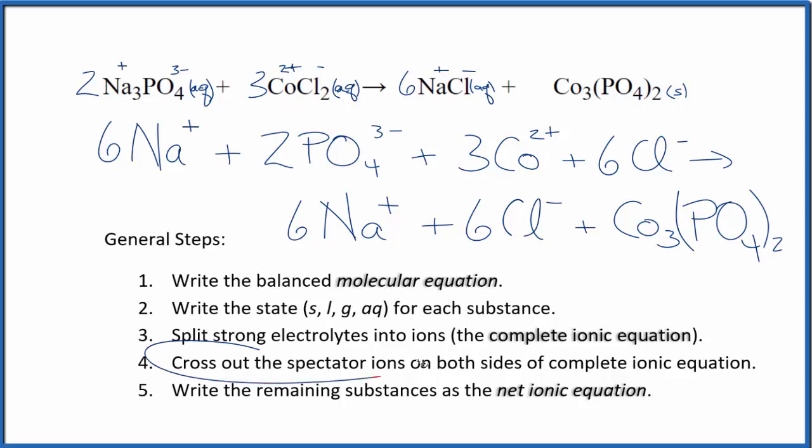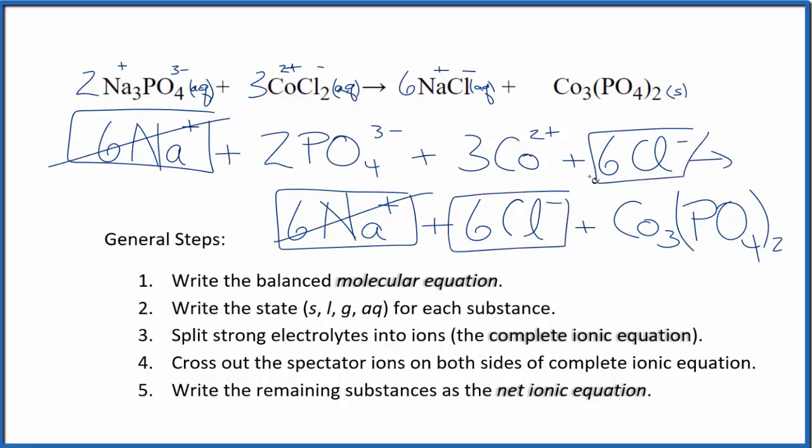Now we can cross out those spectator ions that are on both sides. So you remember we had sodium ion here in the reactants and in the products, six of them. We can cross those out. We had six chloride ions here in the reactants and in the products. Cross those out. And what's left, that's the net ionic equation for sodium phosphate plus cobalt two chloride.